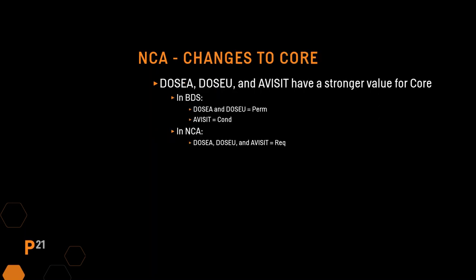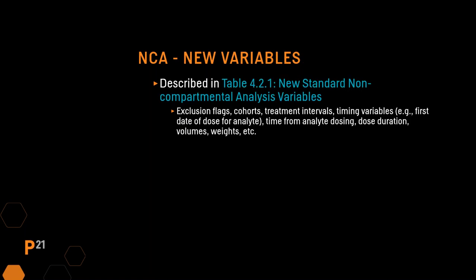One nuance with NCA is that three variables have a stronger core requirement now. DOSEA and DOSEU are permissible in BDS but are now required for NCA. Likewise, AVISIT is conditionally required in BDS but is now required in NCA. Looking at table 4.2.1 in the NCA 1.0 document, there is a whole list of new standard NCA variables covering things like exclusion flags, cohorts, analyte dosing, volumes, and weights — all the things specific to calculating PK parameters.